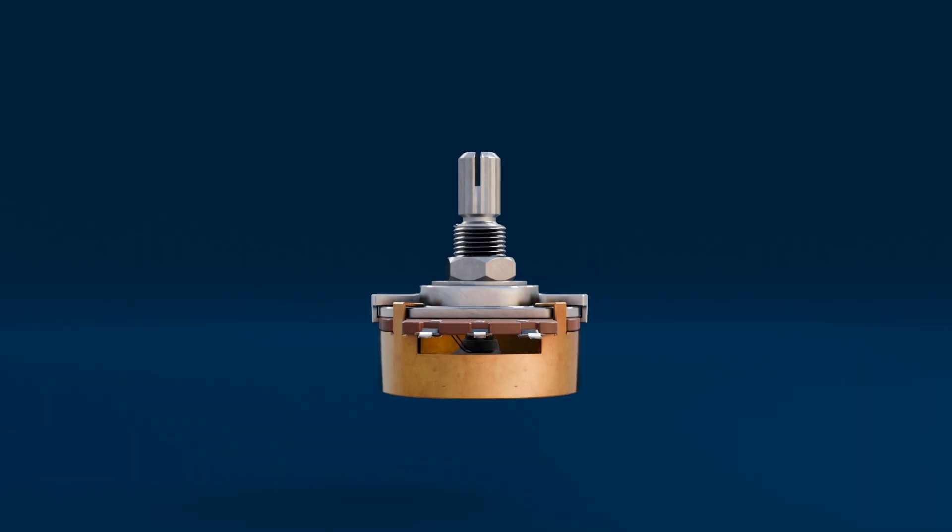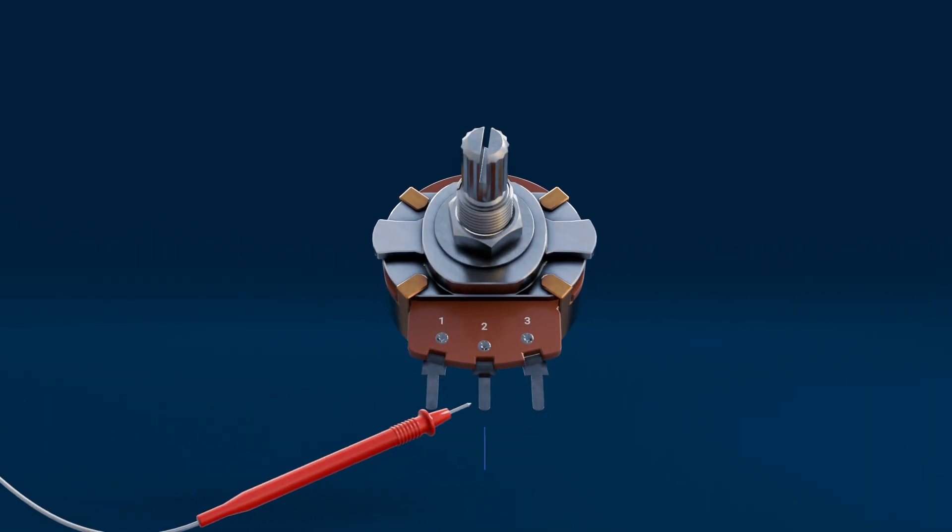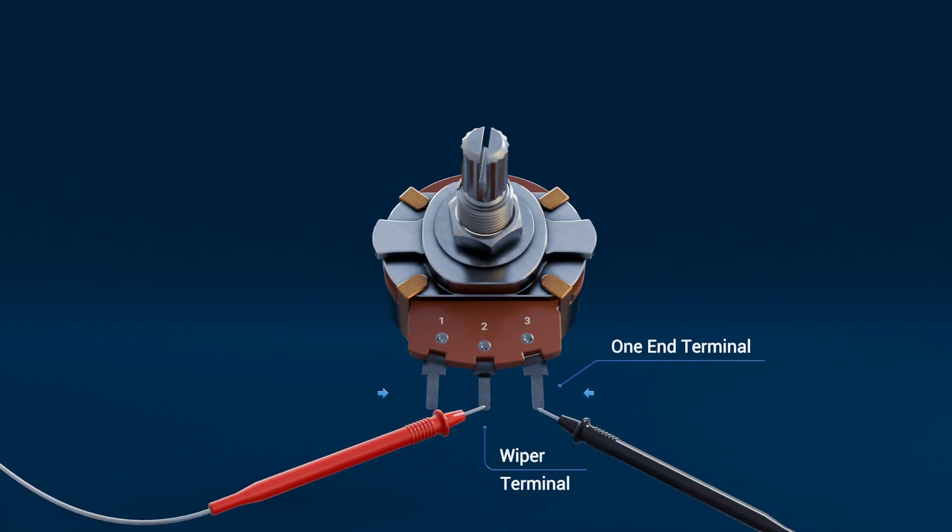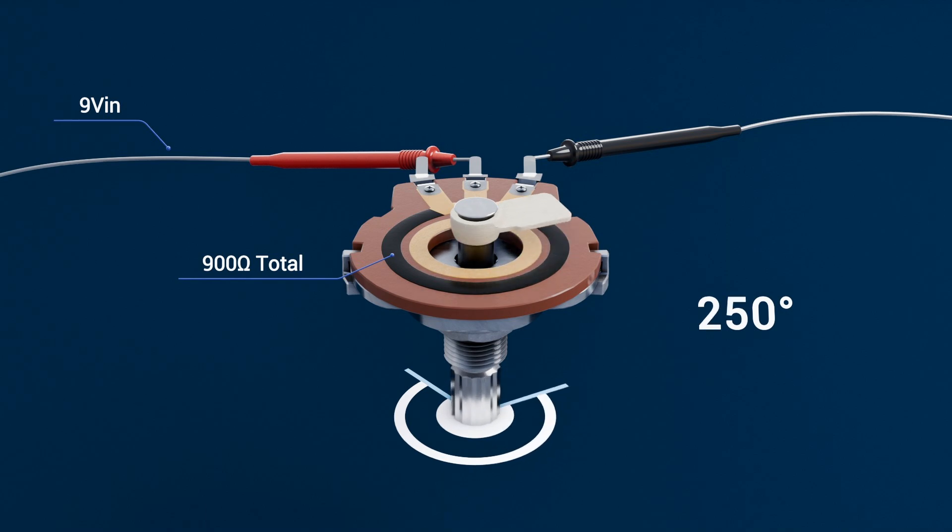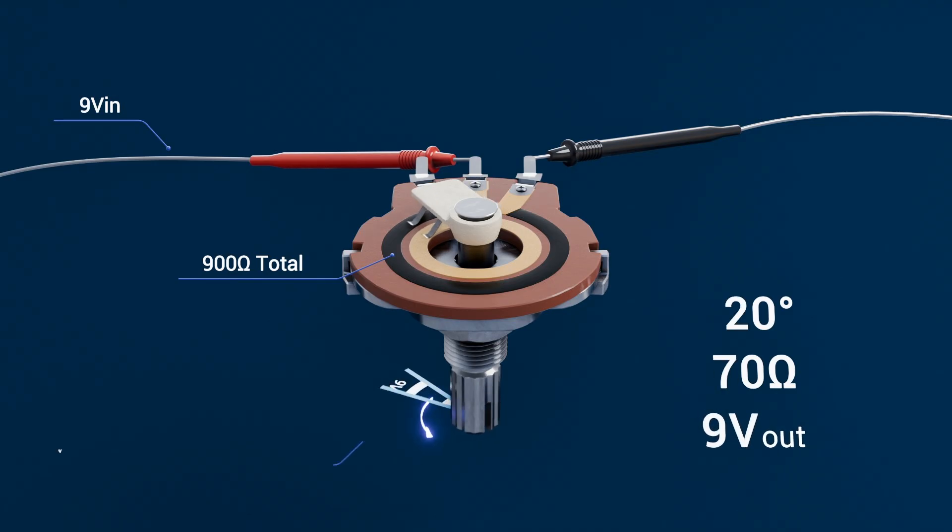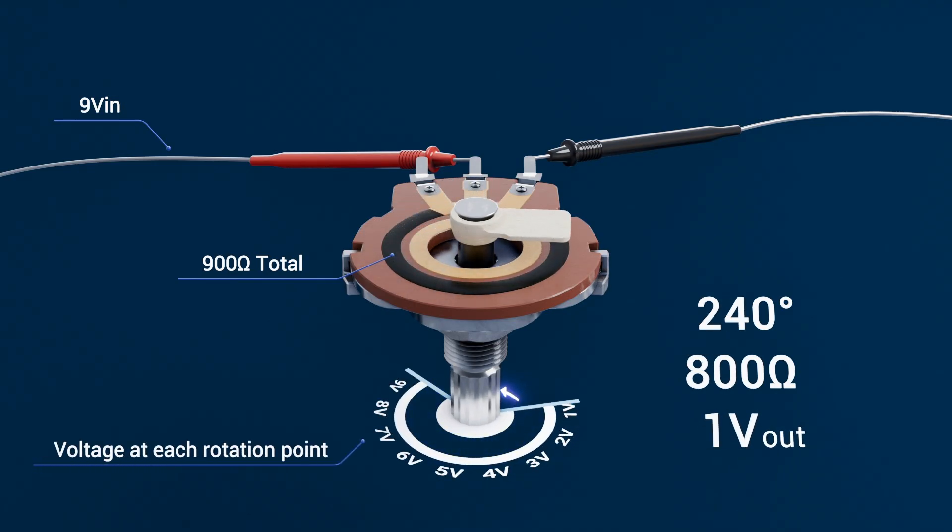For variable resistors used in current control, like fan speed, only two terminals are used, the wiper and one end terminal. When you turn the knob, the wiper slides along the resistive track, changing the resistance between the terminals. As the shaft or slider moves, the voltage changes, giving a direct reliable measurement of rotation or linear motion.